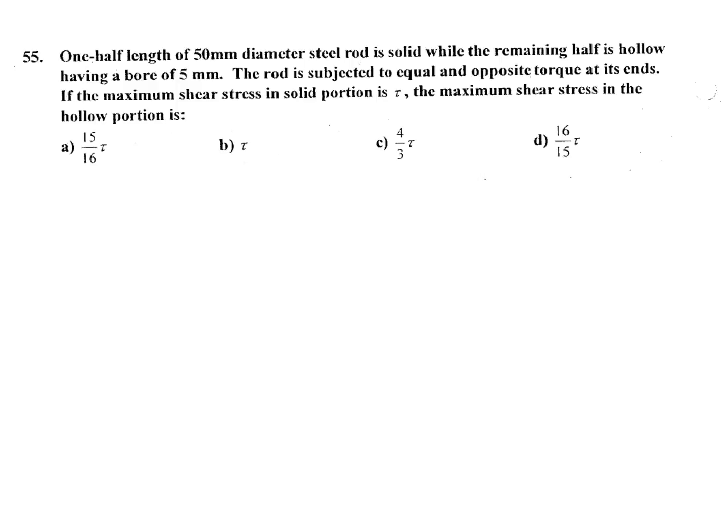One half length of a 50 mm diameter steel rod is solid while the other remaining half is hollow having a bore of 5 mm. The rod is subjected to equal and opposite torque at its end. If the maximum shear stress in solid portion is tau, the maximum shear stress in the hollow portion is?